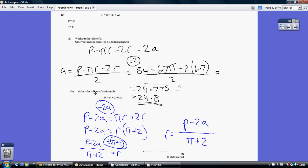Now for part b, we've got to make r the subject. Actually, it is quite difficult - we've got a couple of r's. Let's start off by taking away 2a. That straight away leaves all the terms with r on the right, all the terms without an r on the left. We can then factorise the right-hand side and divide by pi plus 2 to give us r equals p minus 2a all over pi plus 2.